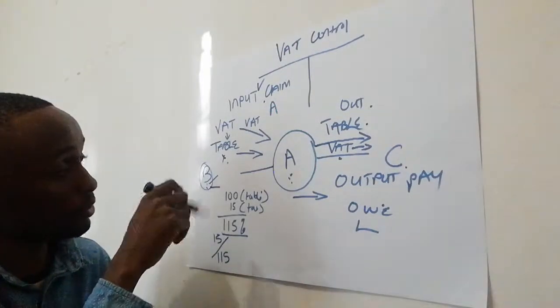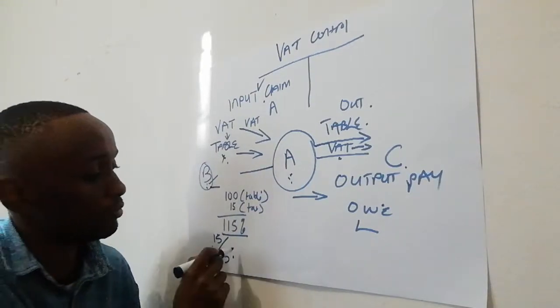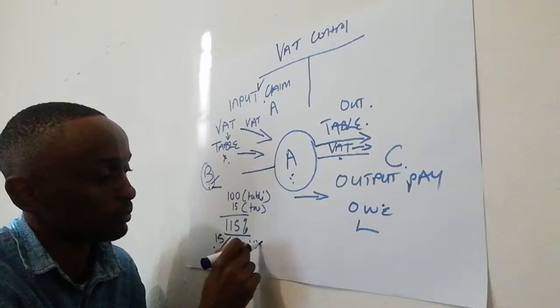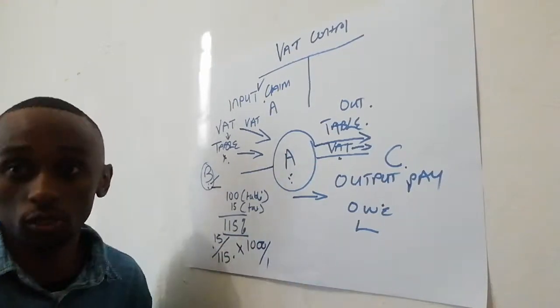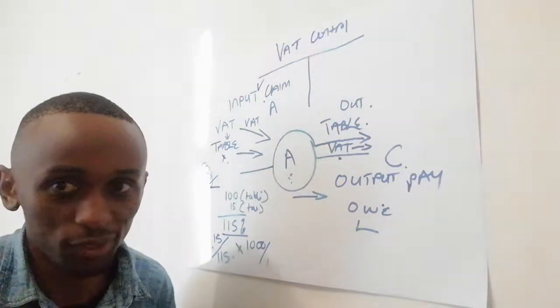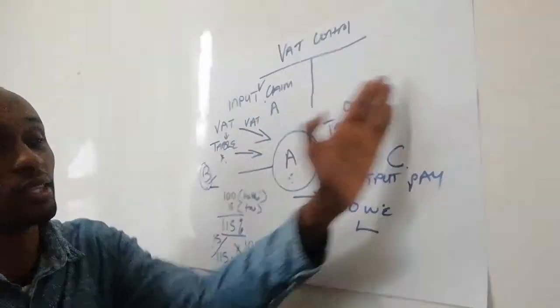For the amount charged on the table, you say 15 divided by 115, multiply by - say you got the table for a thousand - you finish it off with the calculator. It's not so difficult. When you're now dealing with output VAT...